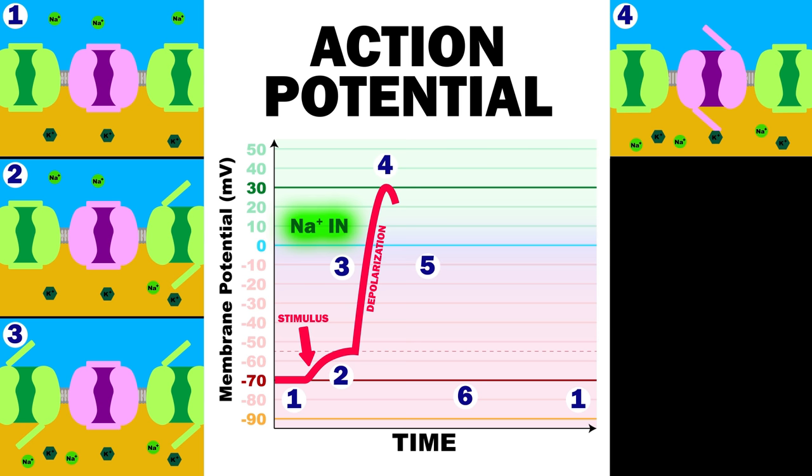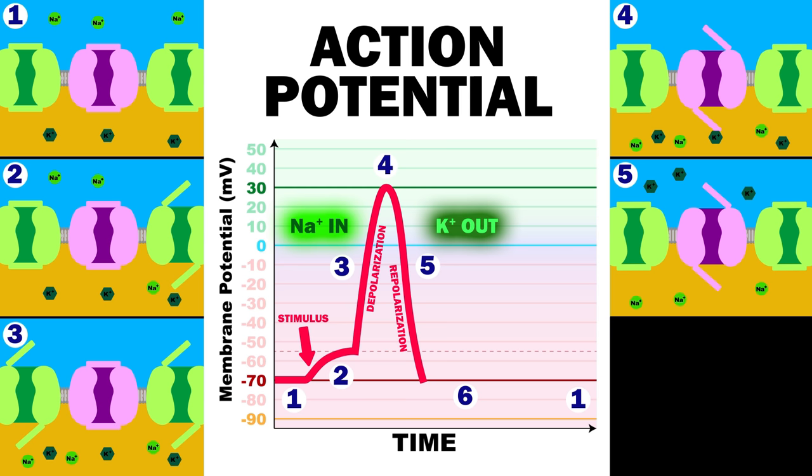Potassium channels now open, and repolarization occurs as potassium rapidly rushes out of the cell. The voltage zooms down and overshoots the minus 70 millivolts, before the potassium channels can close.